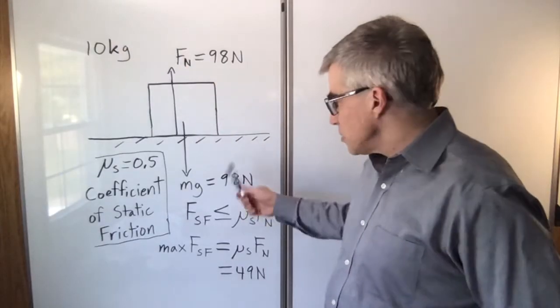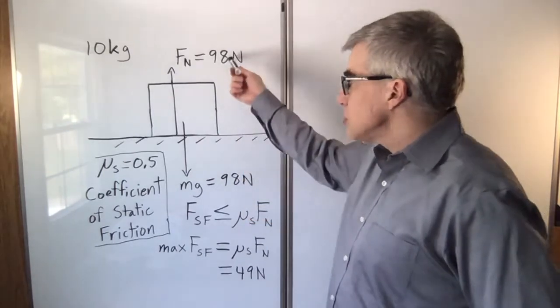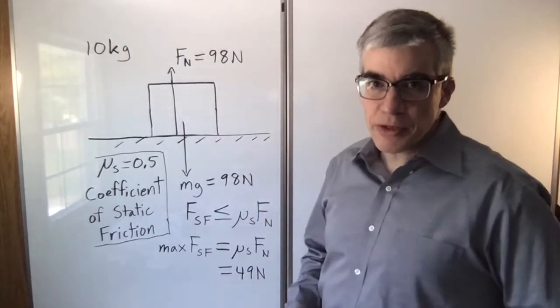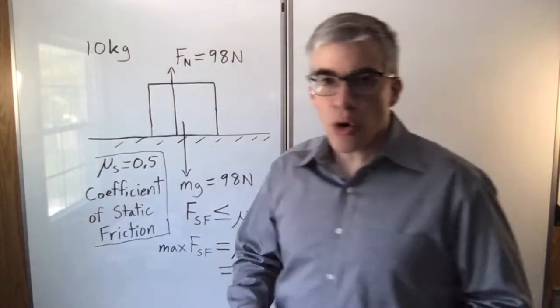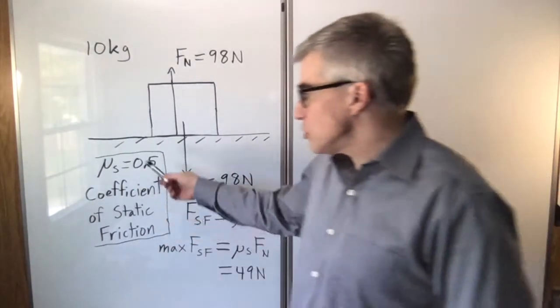A 10 kilogram mass has a weight of 98 newtons, and so the normal force holding it up will be 98 newtons. Let's say it's sitting on a surface with a coefficient of static friction of 0.5.